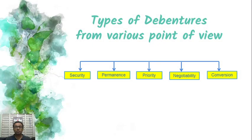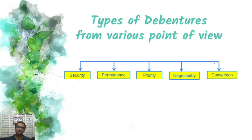How many types of debentures are there? There are 5 types of debentures classified. From the security point of view, permanence point of view, priority point of view, negotiability point of view, and conversion point of view.